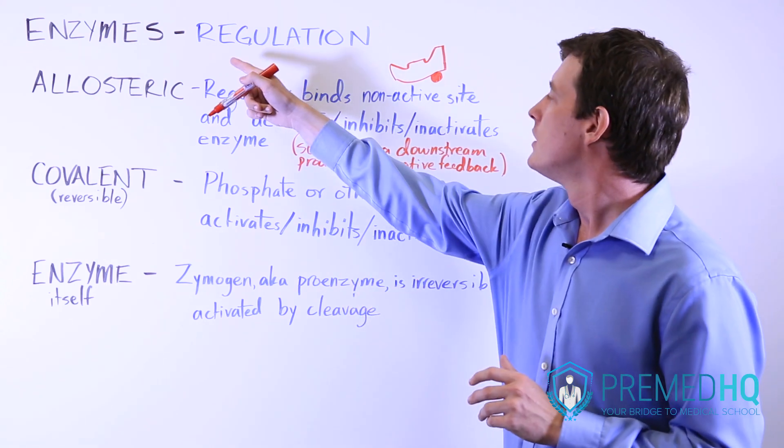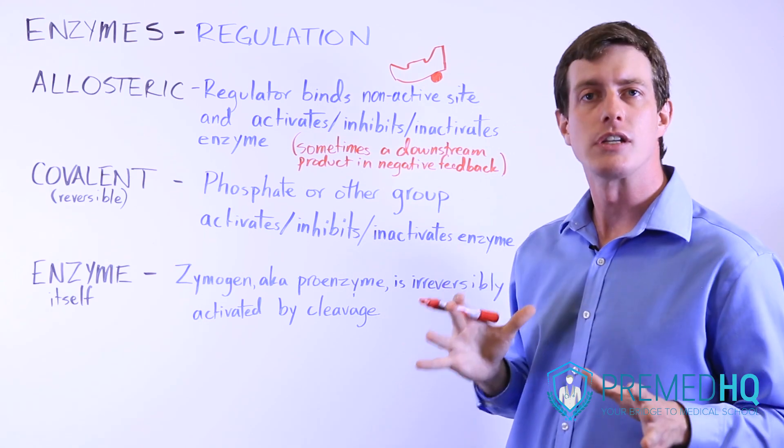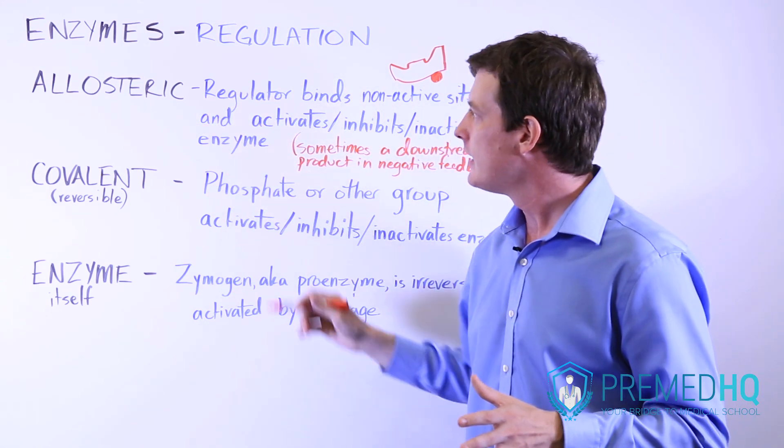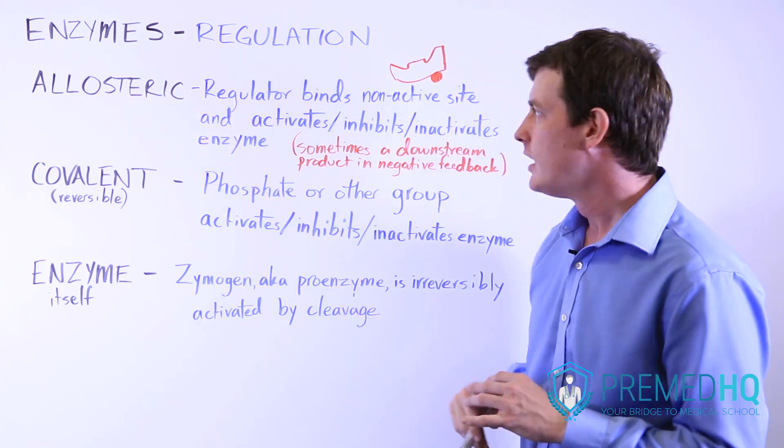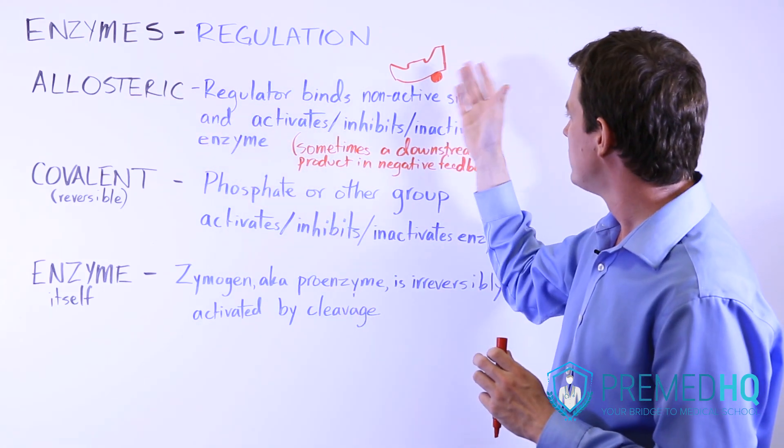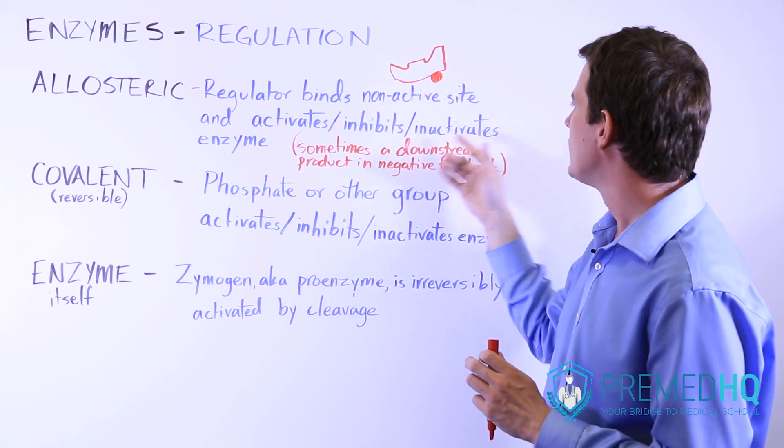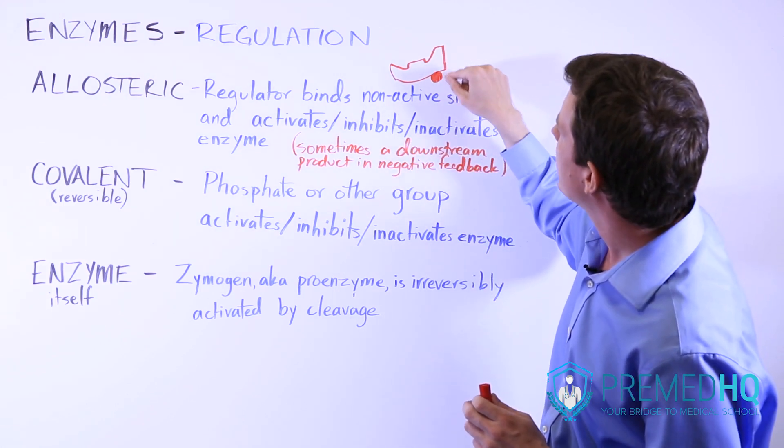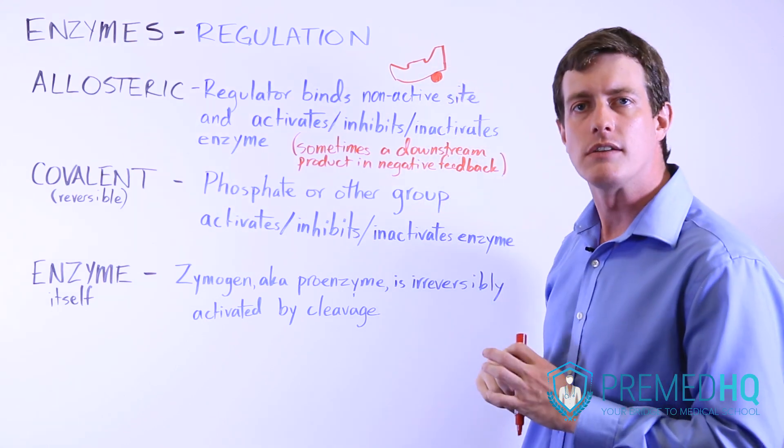So as far as regulation of enzyme function goes, these are the three ones that you'll see come up again and again. Allosteric regulation, which is either activation or inhibition or even inactivation by something binding to a site other than the active site of that enzyme.